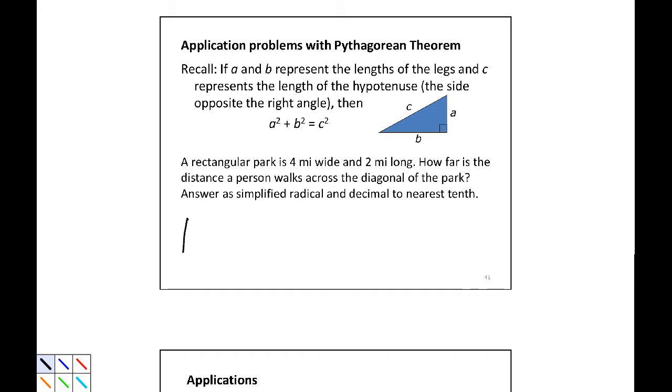I'm going to start out by just drawing our rectangular park. It is 4 miles wide and 2 miles long, although most of the time we think of long and wide differently. So 4 miles wide and 2 miles long. We want to know what the distance across the diagonal is. Now this is going to be a right angle, so we can use the Pythagorean theorem to find this side.